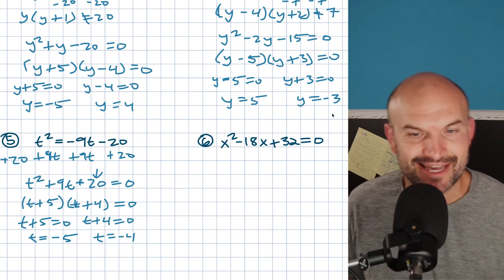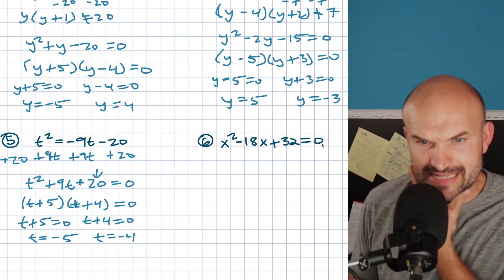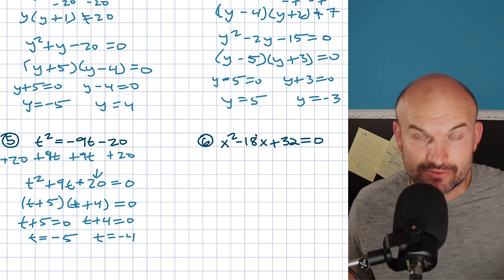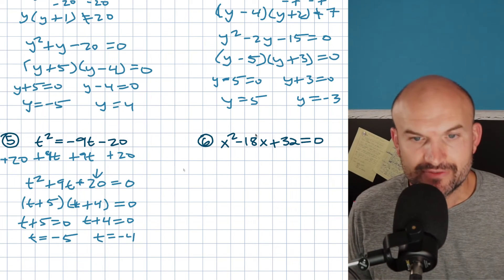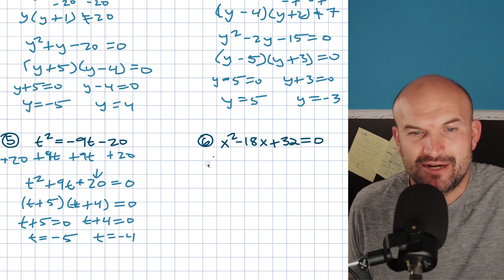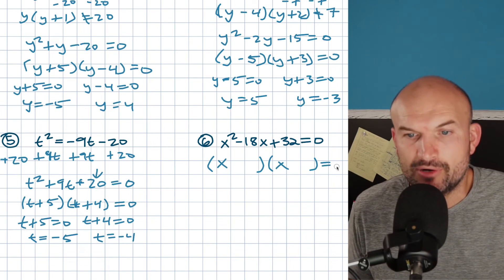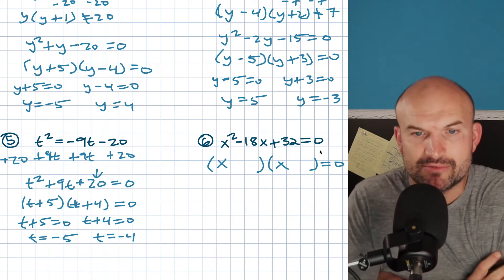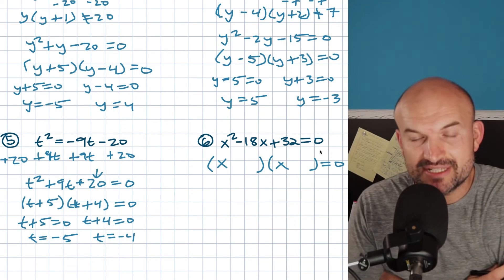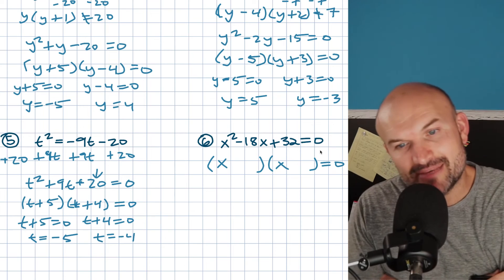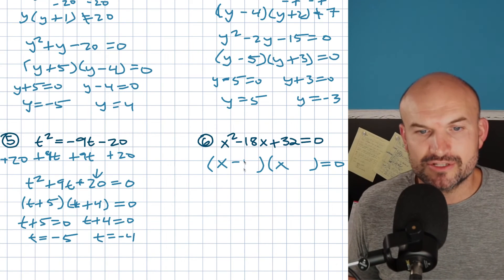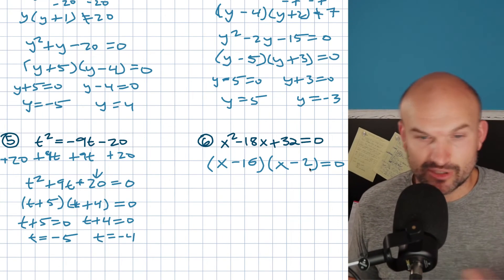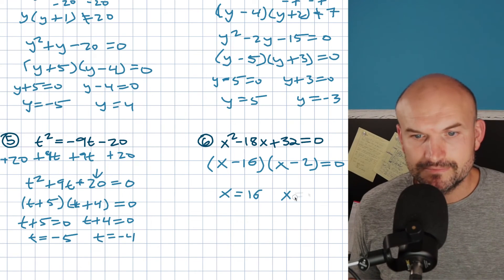In this example, my last number is positive and I'm looking for two factors that multiply to 32 and add to give me negative 18 — so both factors are negative. The factors of 32: 32 and 1 is 33 — no. 16 and 2 gives me 18 — yes! Since they add to give me negative 18, both factors are negative. So this is (x minus 16)(x minus 2) equals zero. Setting each factor equal to zero and solving, I get x equals 16 and x equals 2.